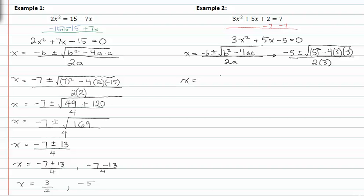Simplifying further, I get negative five plus or minus the square root of twenty-five plus sixty, all over six. So x is equal to negative five plus or minus the square root of eighty-five all over six.